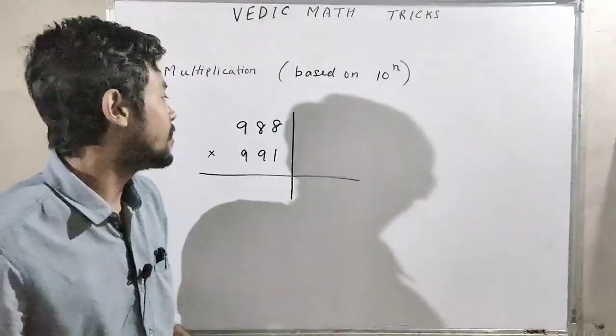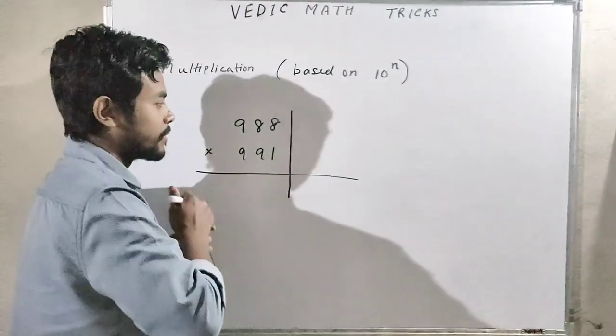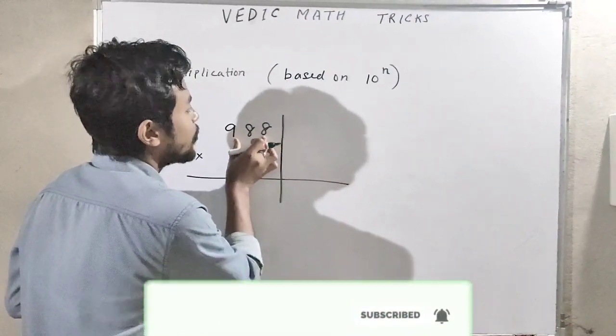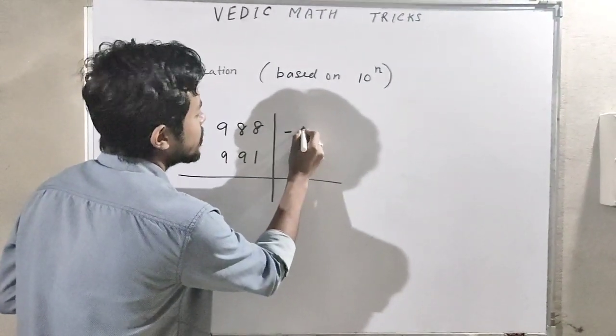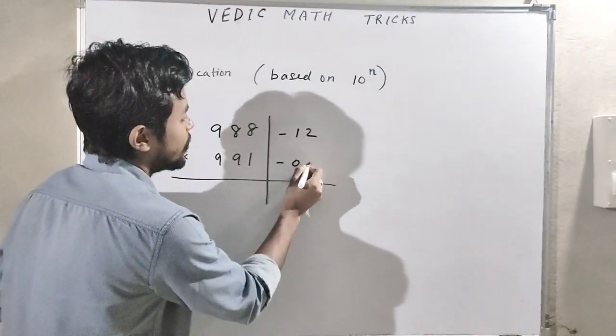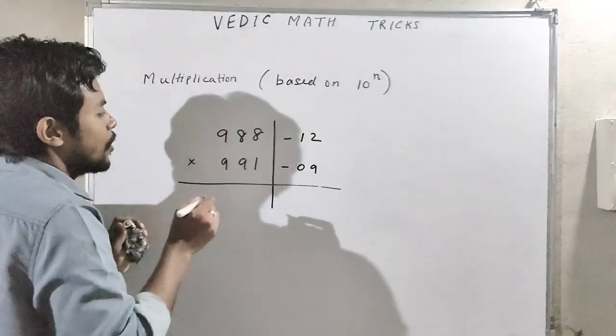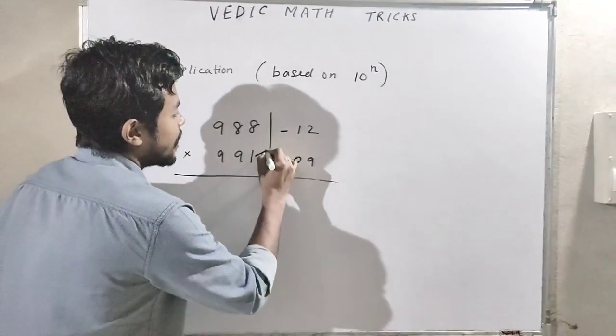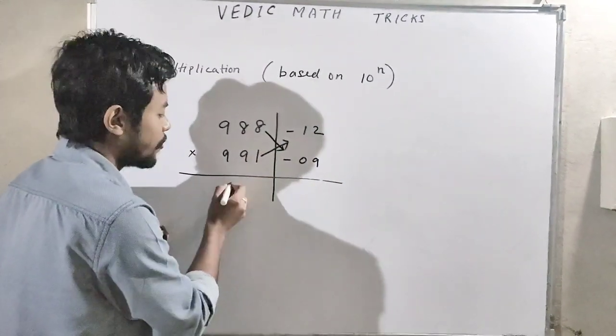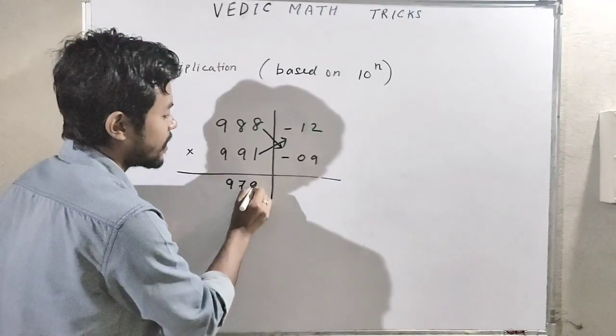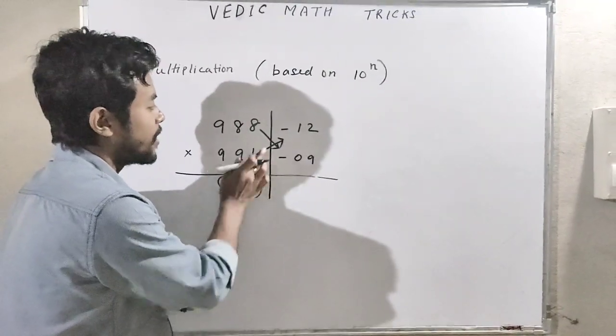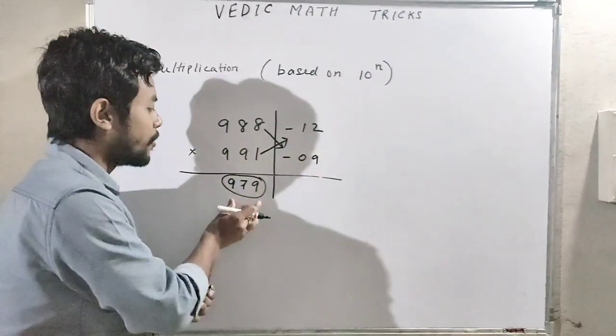Let us take another example: 988 by 991. Here we have to consider 988 with respect to 1000, how much less? Minus 12. And 991 is minus 09. Now what we have done? 991 minus 12 or 988 minus 09, how much do we get? We get 979. You know one thing: we get the same result here, either this way or this way. The result is same.